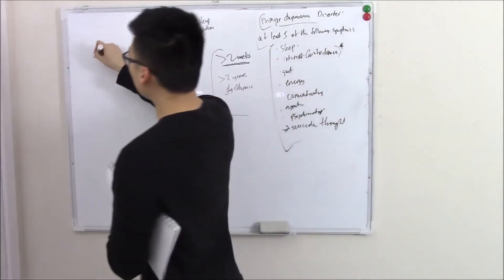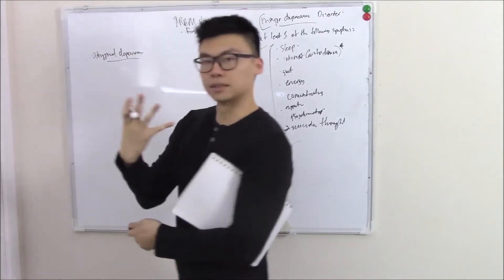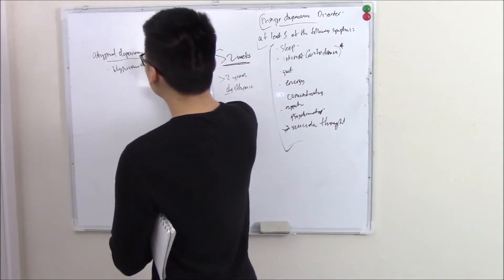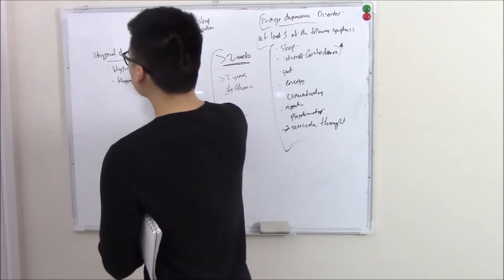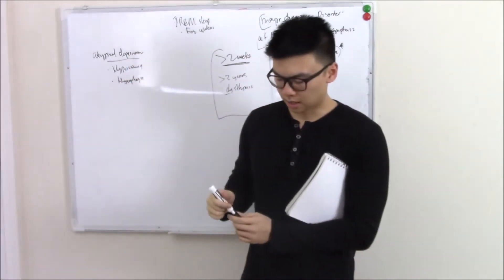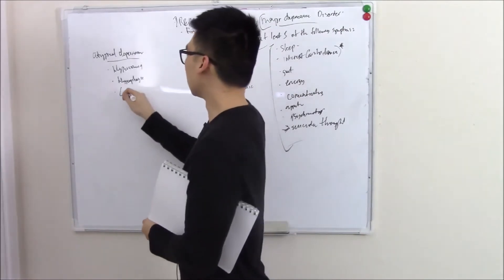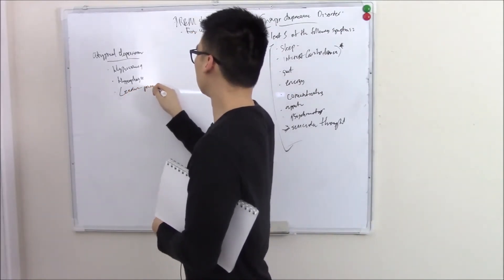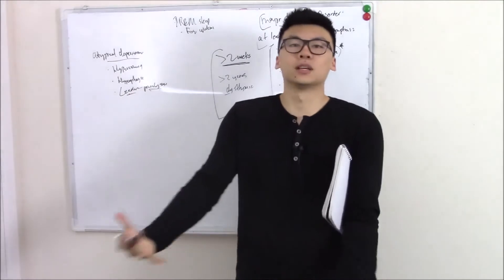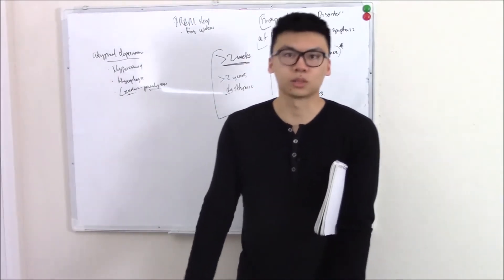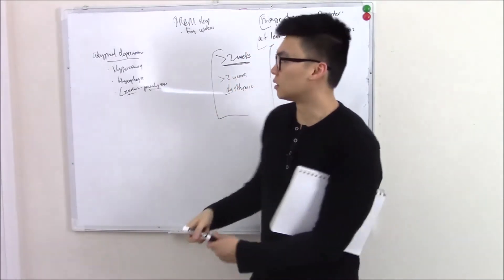You can have atypical depression. Why do they call it atypical? Because instead of insomnia, you can have increased sleep — hypersomnia. Instead of loss of appetite, you can have increased appetite — hyperphagia. Another classical sign is increased sensitivity to criticism. But the dead giveaway is leaden paralysis — you feel like your limbs are made out of lead. When they're trying to get out of bed, their arms feel so heavy. That's leaden paralysis, very classic of atypical depression.